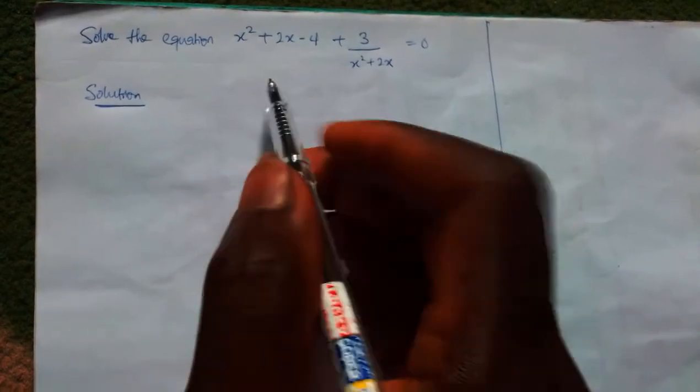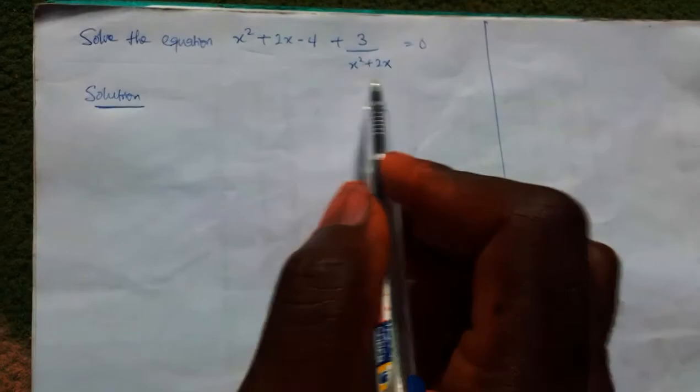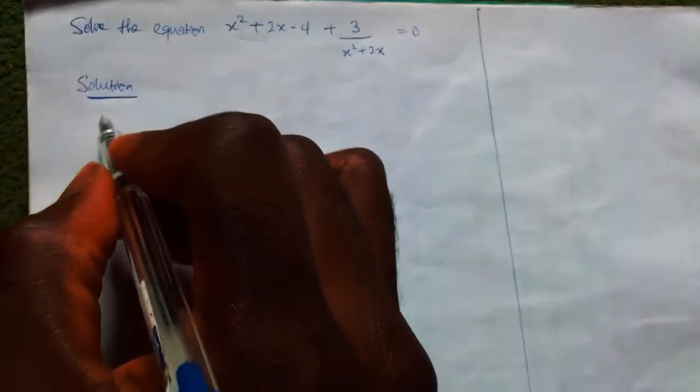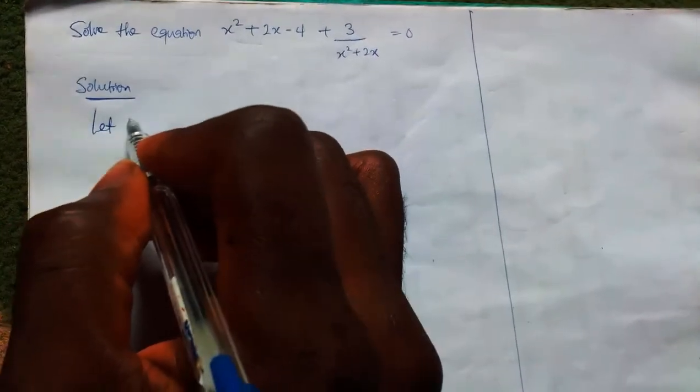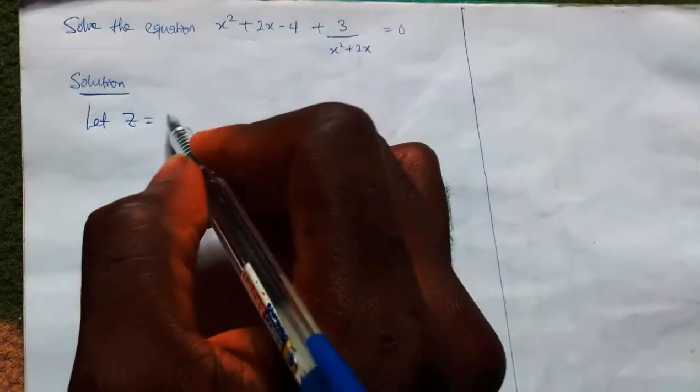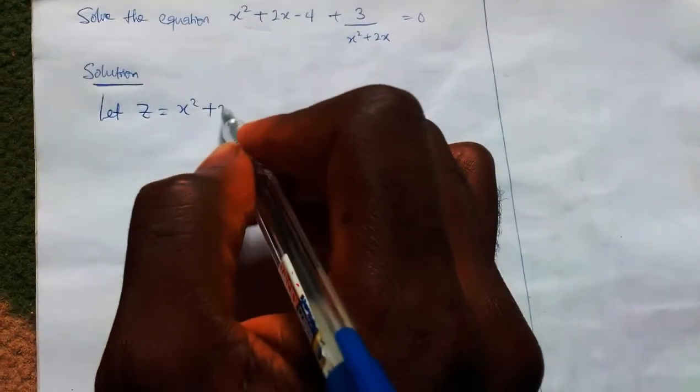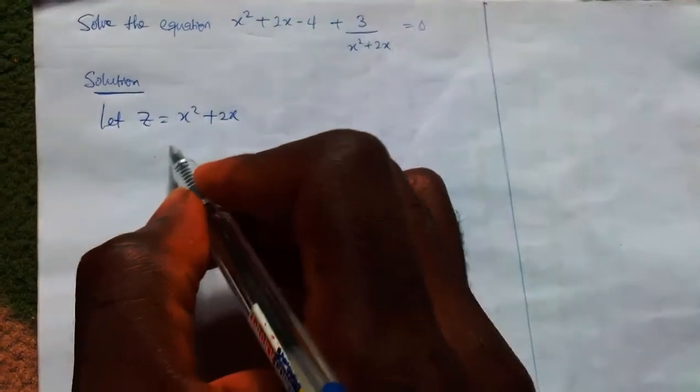Notice that this and this are the same thing, so I can also just say let z be equals to x squared plus 2x such that I'll now have the equation to be z minus 4 plus 3 over z equals zero.